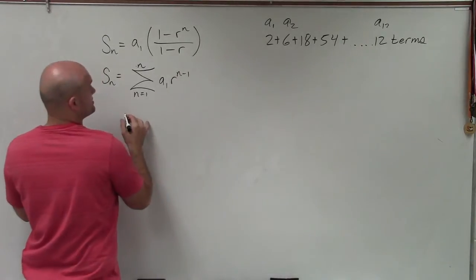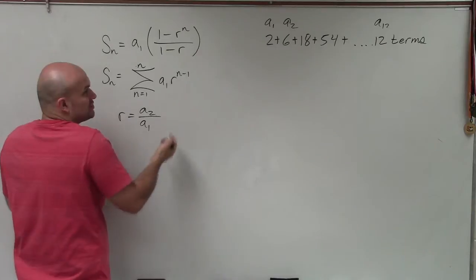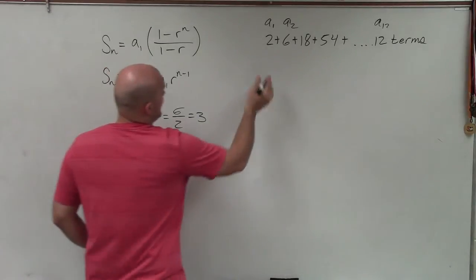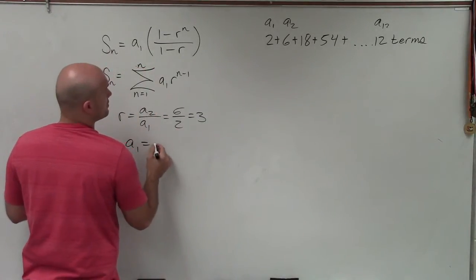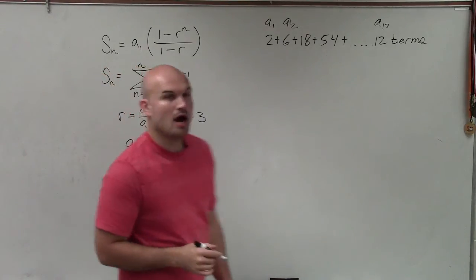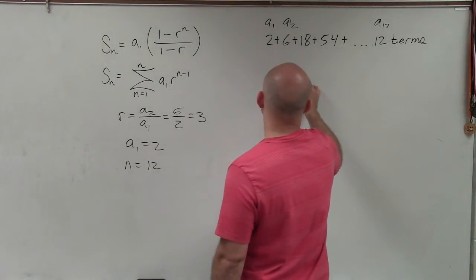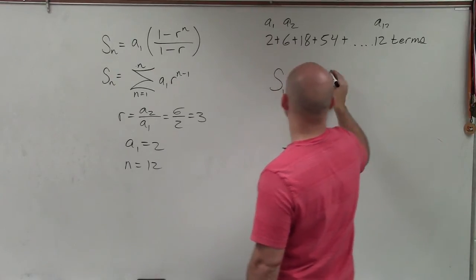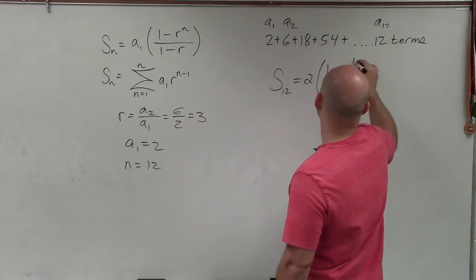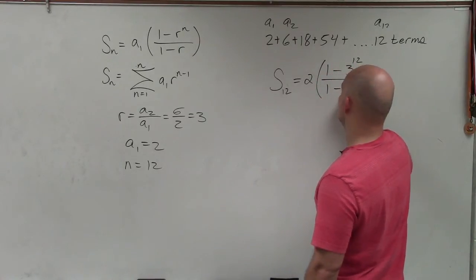First, we need to figure out what r is. Remember, r is the ratio between any term and its previous term. In this case, 6 divided by 2 equals 3. So r equals 3, a sub 1 equals 2 (that's our first term), and n equals 12. Now let's plug into the formula: S of 12 equals 2 times (1 minus 3 raised to the 12th power) divided by (1 minus 3).